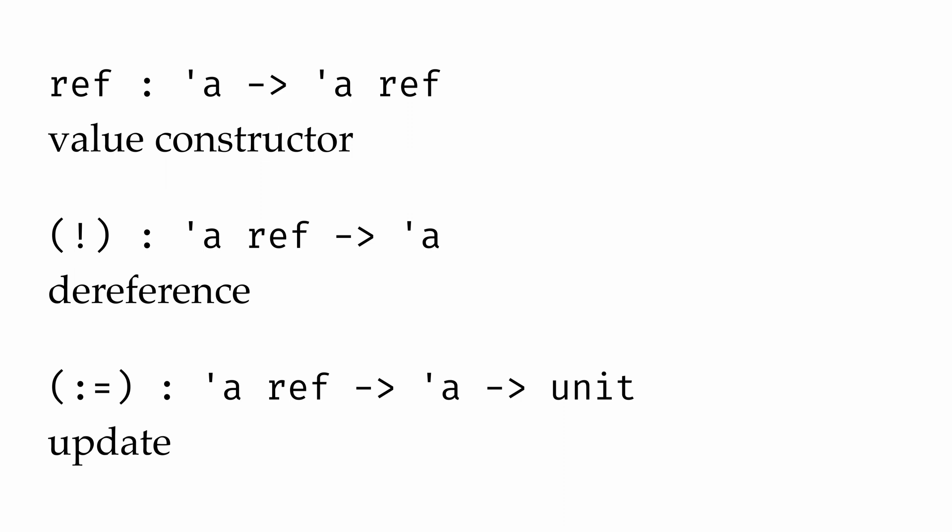The update operator doesn't need to return any value since its purpose is purely to have a side effect, so it returns the unit type, which conveys no information. As we start working with variables and references, it can be helpful to visualize what's stored in our computer at any given time.